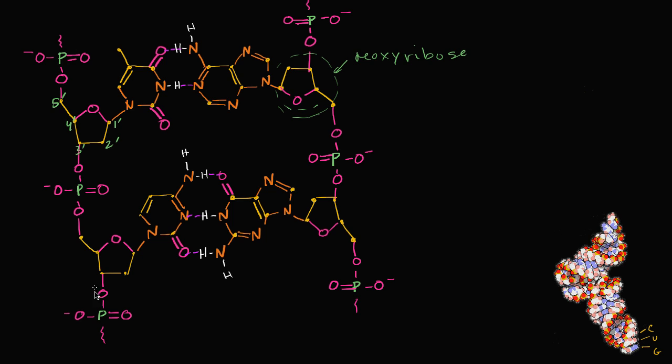Well, to turn this into RNA, or to make it look like RNA, on the two-prime carbon, we want to turn the deoxyribose into just ribose, so we would want to add a hydroxyl group right over here.